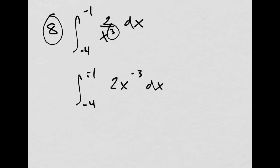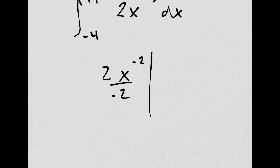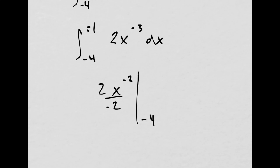Anytime there's an exponent there that's not just 1, we use the power rule. Then this would be x to the negative 2 divided by negative 2 with the coefficient of 2 up front. Evaluated from negative 4 to negative 1.